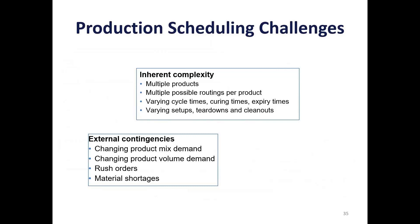Add to that external contingencies. Product demand and the mix of product demand changes. The volume of product demand may change over time due to seasonal factors or other factors. Some customers will insist upon rush orders, and some vendors may unintentionally cause material shortages.